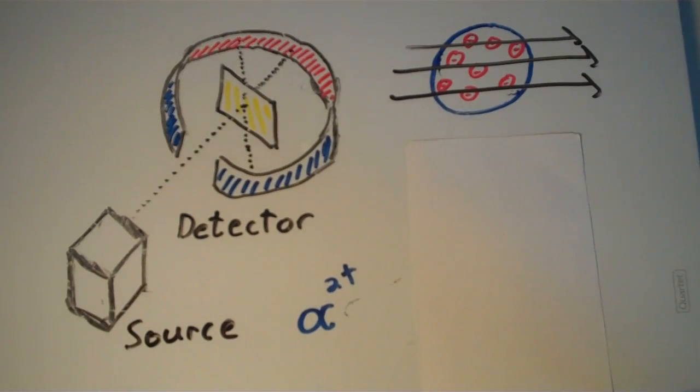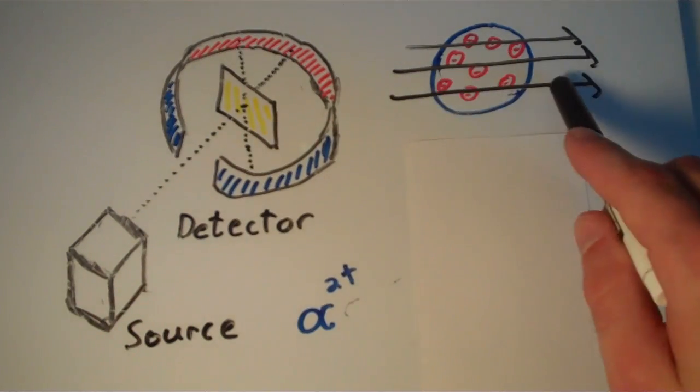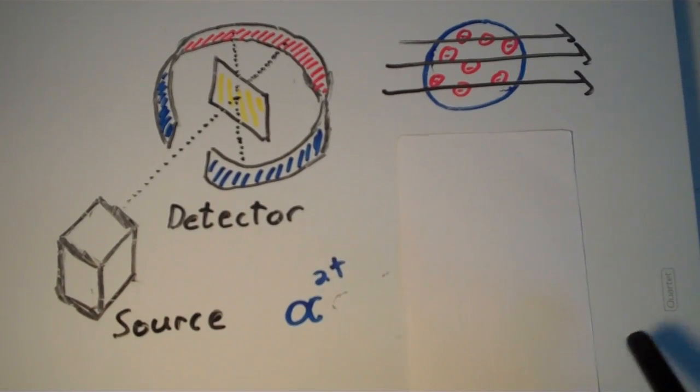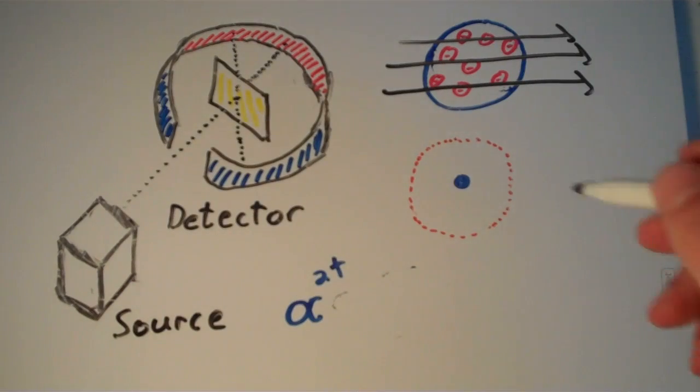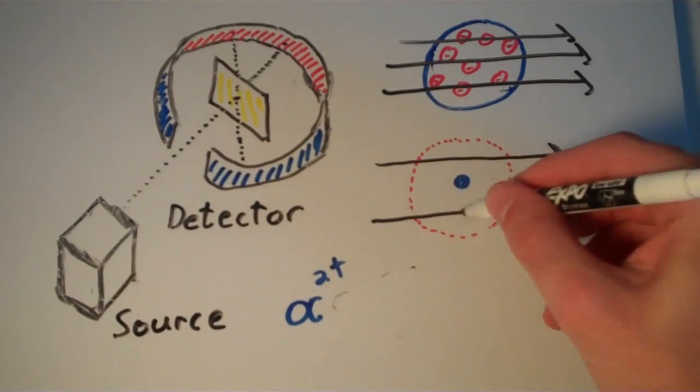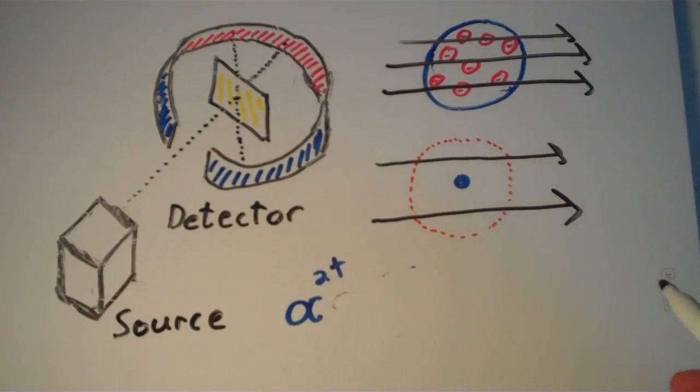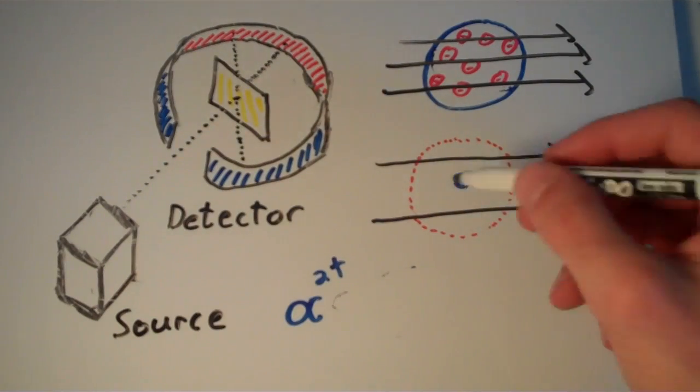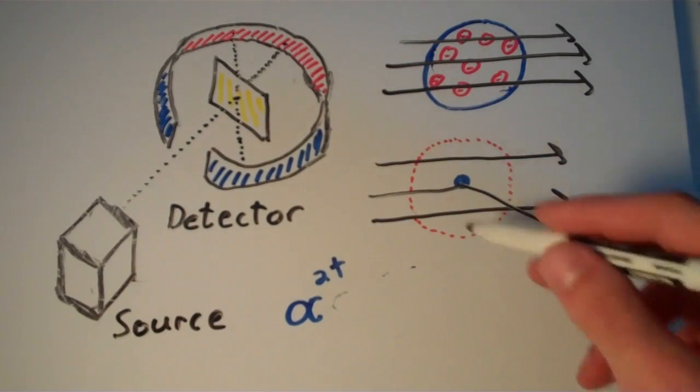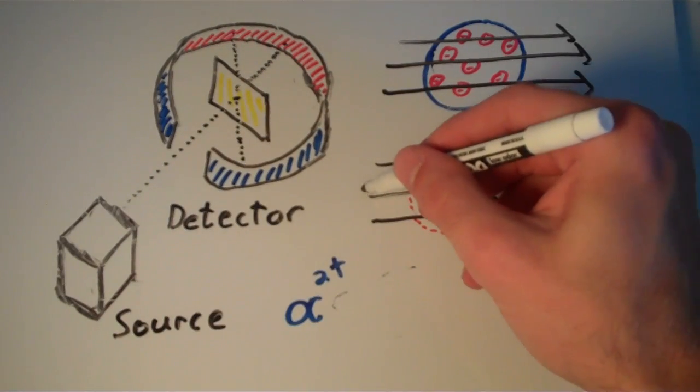So this up here is ideally what Rutherford was expecting to happen. But what really happened was something that looks more like this. Again, most of the alpha particles pass straight through. However, some of them get deflected and some of them even bounce back.